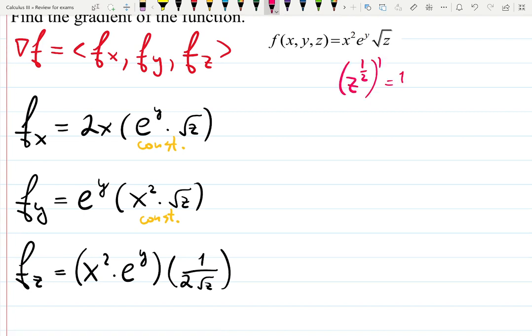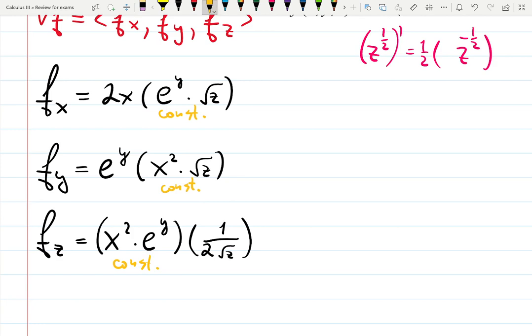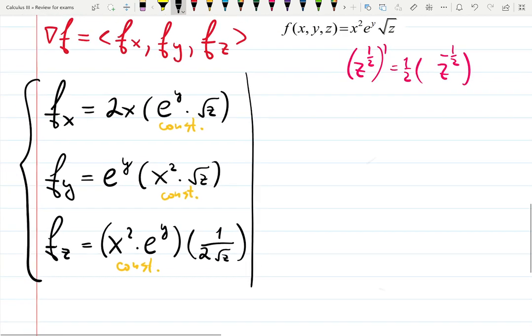Yes, 1 half multiplied by z to the minus 1 half. No negative, z to the minus 1 half. I wanted to write down that this is a constant as well.